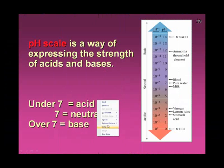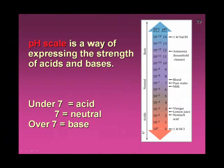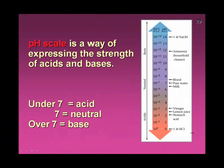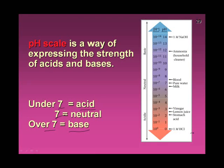We're going to talk about pH. It's a term you've all heard. You probably know that if something has a pH of 7 it's neutral, if it's less than 7 it's an acid, if it's more than 7 it's a base. But you probably don't know that pH is simply a way of expressing the strength of acids and bases.